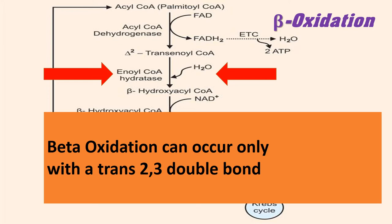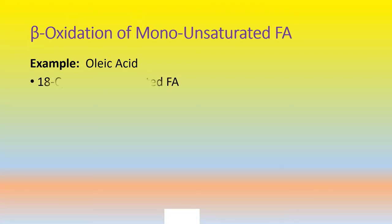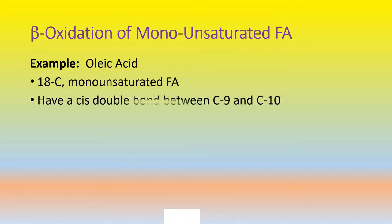Due to the presence of the double bond in cis configuration, beta oxidation can occur only with a trans 2,3-double bond — that is, a double bond between carbon number two and three in trans configuration. For example, oleic acid is an 18-carbon monounsaturated fatty acid with a cis double bond between carbon number nine and ten.